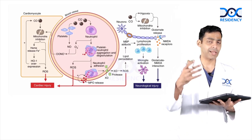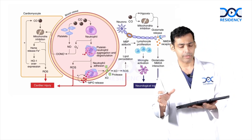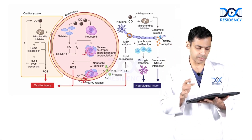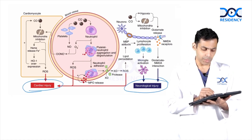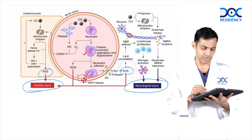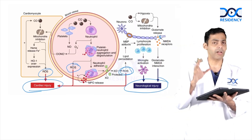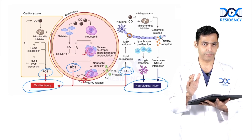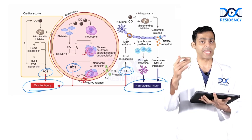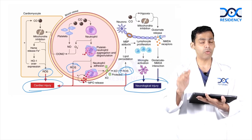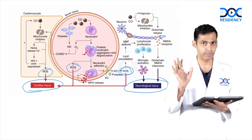Carbon monoxide causes mitochondrial inhibition, disrupting oxidative phosphorylation and thereby ATP formation. With no ATP production, aerobic respiration is cut off, resulting in anaerobic respiration and lactic acidosis. The final outcomes are cardiac injury and neurological injury, mediated by reactive oxygen species. This graph illustrates the full pathophysiology, but the key points are mitochondrial inhibition, loss of ATP, and the resulting tissue damage.